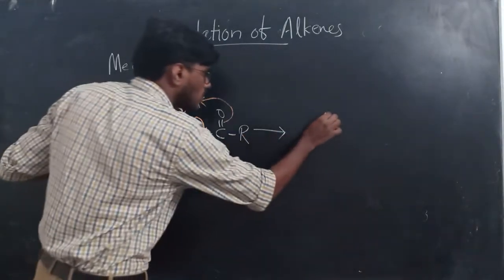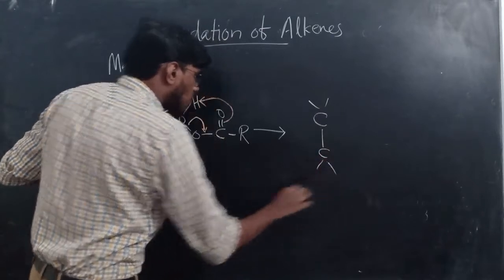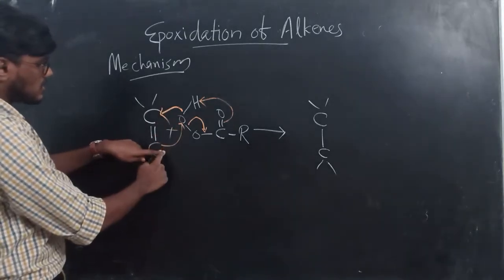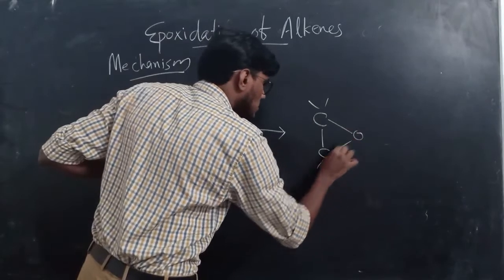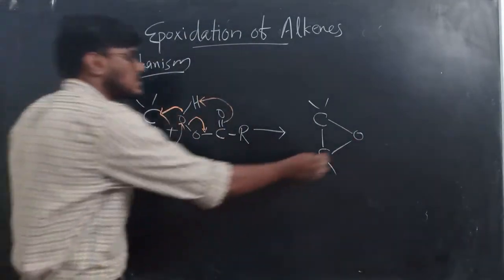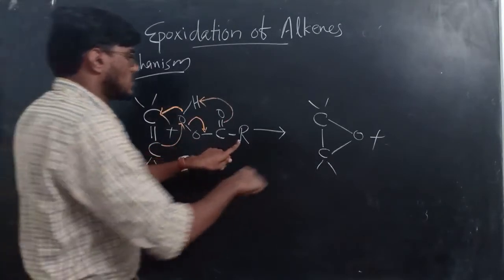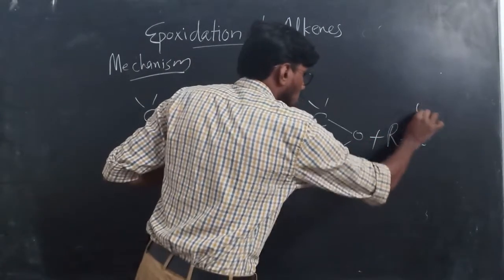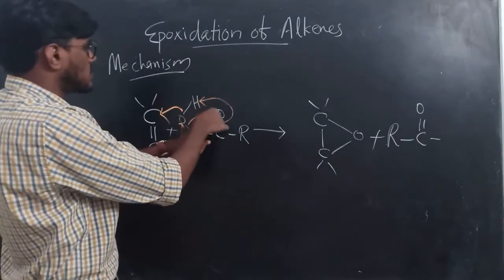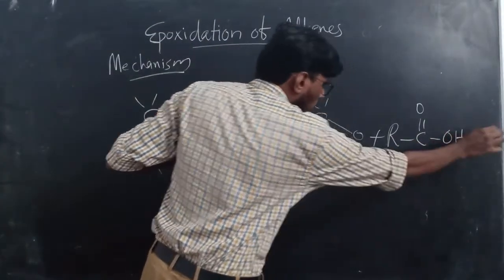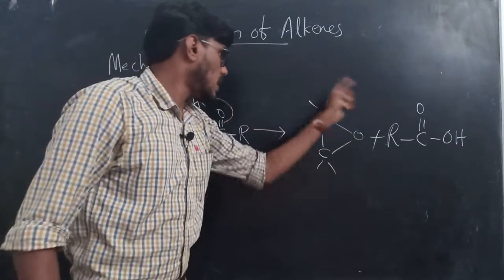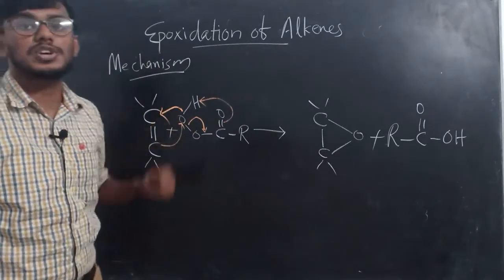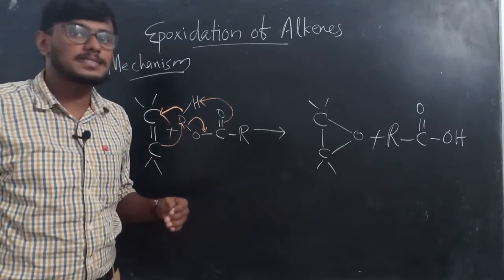Using the pi electrons, the proton is abstracted. The product formed has the double bond converted to a single bond, with both carbons bonded to the oxygen, forming an epoxide. The byproduct is a carboxylic acid R-COOH. So the epoxide is the main product and the acid is the byproduct — this is the single-step, stereospecific mechanism of epoxidation with peroxy acids.